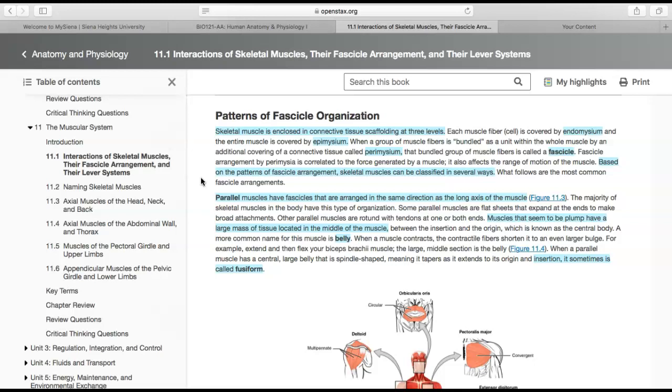Remember, we called these mysia. Each muscle fiber is covered by endomysium, the entire muscle is covered by epimysium, and the bundled unit, which we call fascicle, is covered by the perimysium. Fascicle arrangement is correlated to the amount of force generated by a muscle and can affect the range of motion. There are different patterns of fascicle arrangement that skeletal muscles have, and they can be classified by that arrangement.